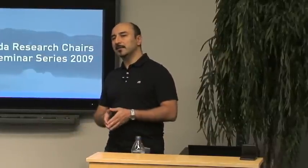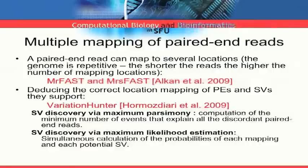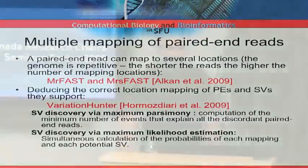And once the potential mapping locations of individual reads are obtained, we have to figure out the correct ones by jointly analyzing the mappings through a software called Variation Hunter. This also appeared pretty recently in RECOMB and simultaneously in Genome Research, a special issue of RECOMB. In Variation Hunter, there are two options. Either you try to figure out the structural variations through the maximum parsimony approach or through the maximum likelihood estimation.